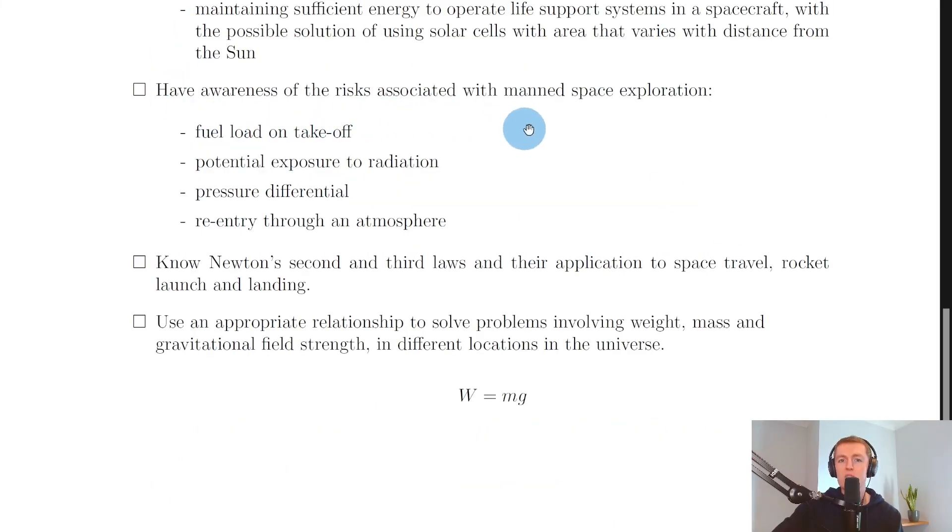Moving on, it says you need to have awareness of the risks associated with manned space exploration, and some of them are listed here for you. So we've got fuel load on takeoff—obviously you want to have enough fuel on board for launch, for getting you around in space when you're there, and for re-entering Earth's atmosphere. But you don't want to take too much fuel because that would increase the mass of your spacecraft on launch, and you don't want to have too little fuel because then you might not be able to move around in space when you get there or come back to Earth. Another risk would be potential exposure to radiation, and we talked about solar flares and exposure to ionizing radiation.